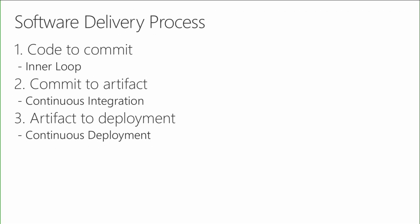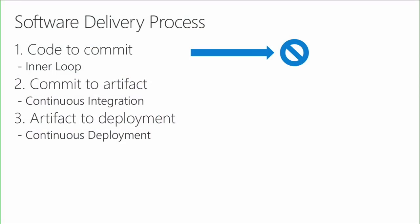It's helpful to reflect on the software delivery process for modern container-based applications. Breaking it into three distinct steps: first is code to commit — what we at Microsoft call the inner loop — while developers are hacking on code before they commit and push to version control. Second is commit to artifact: after developers push their code, a continuous integration system picks up those changes, builds container images, tests them, and publishes them to a container registry. The third step is artifact to deployment, where artifacts are continuously deployed to staging and production environments with whatever human gating and testing is required.